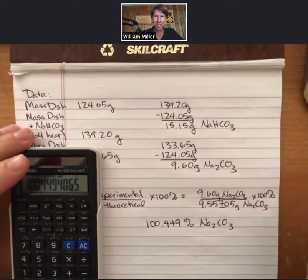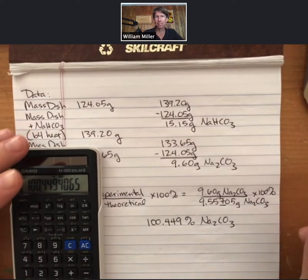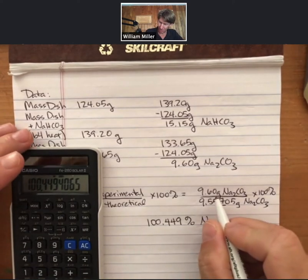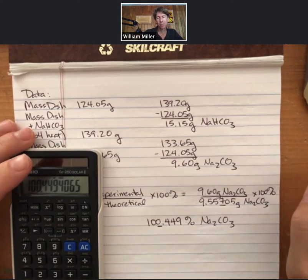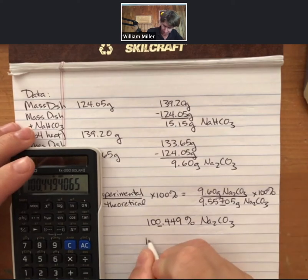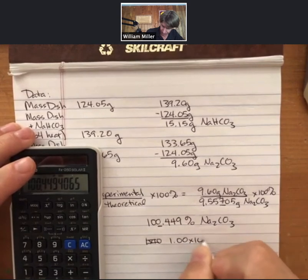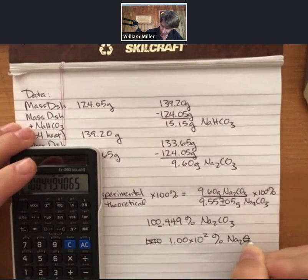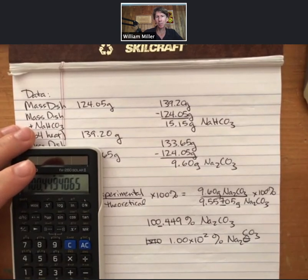My percent yield is 100.449% sodium carbonate — I got more than expected! The lab mentions investigating if that's a trend everyone sees. Since I have three and four significant figures, rounded correctly it becomes 1.00 × 10² percent sodium carbonate as my yield.